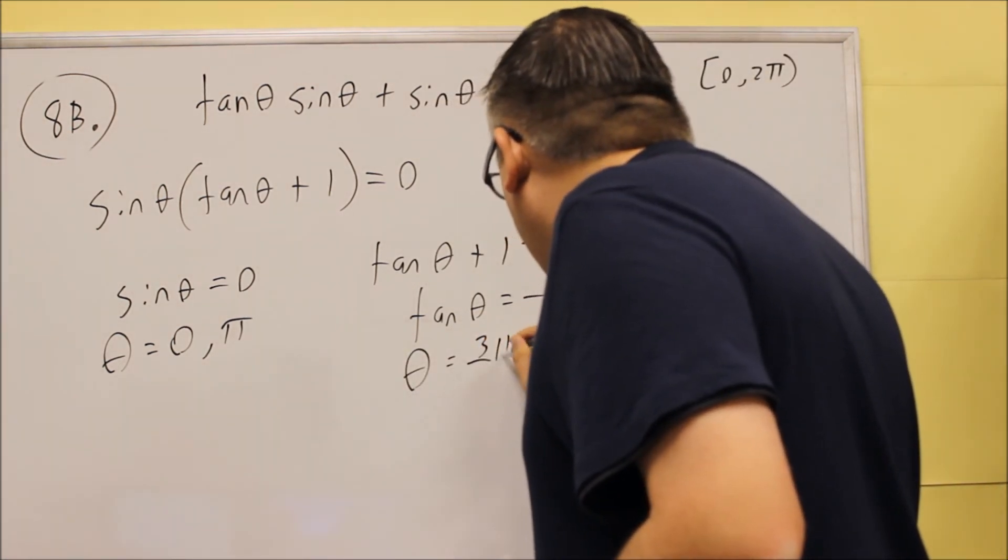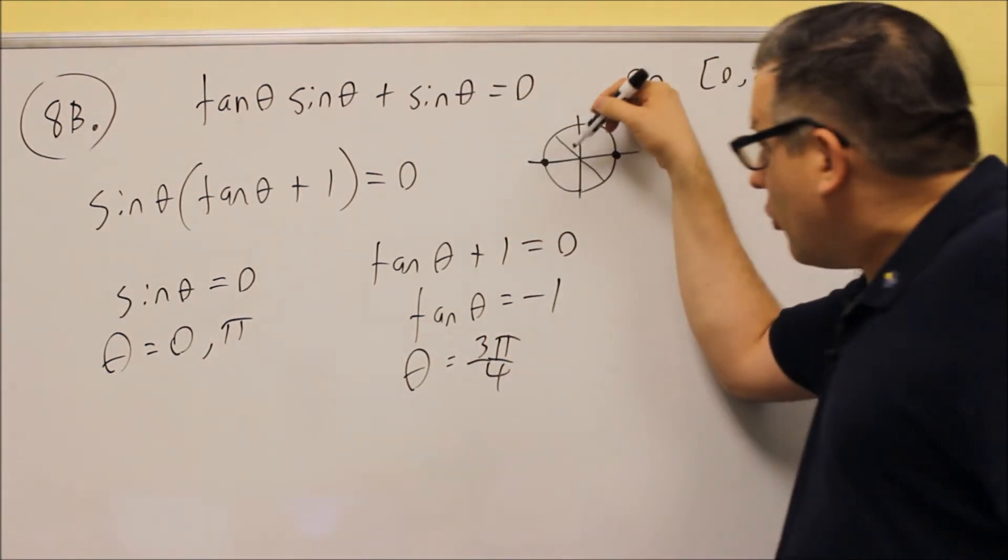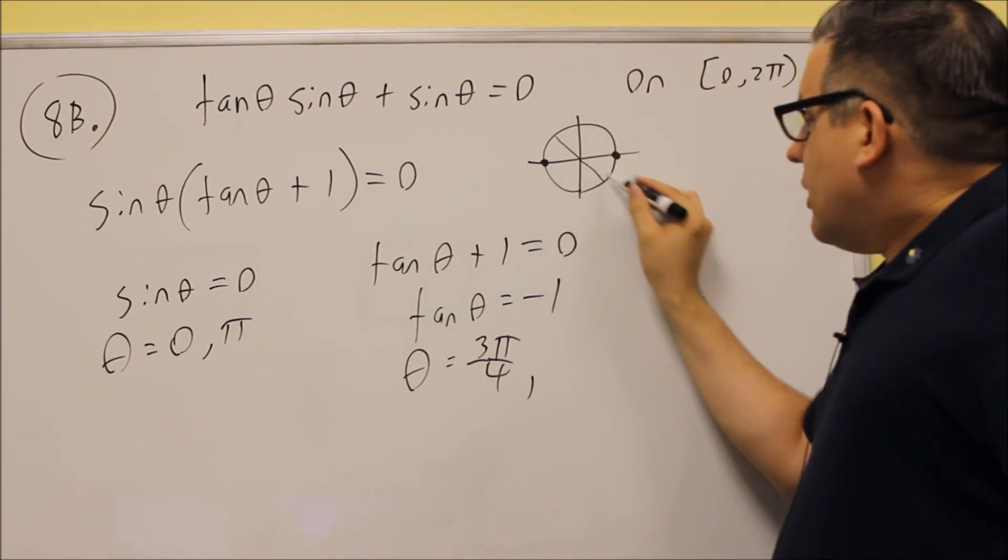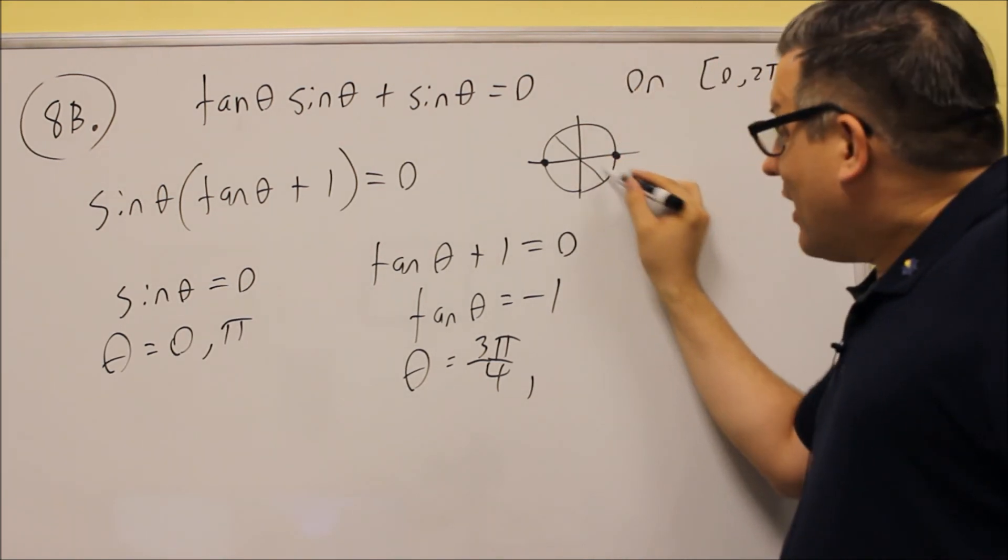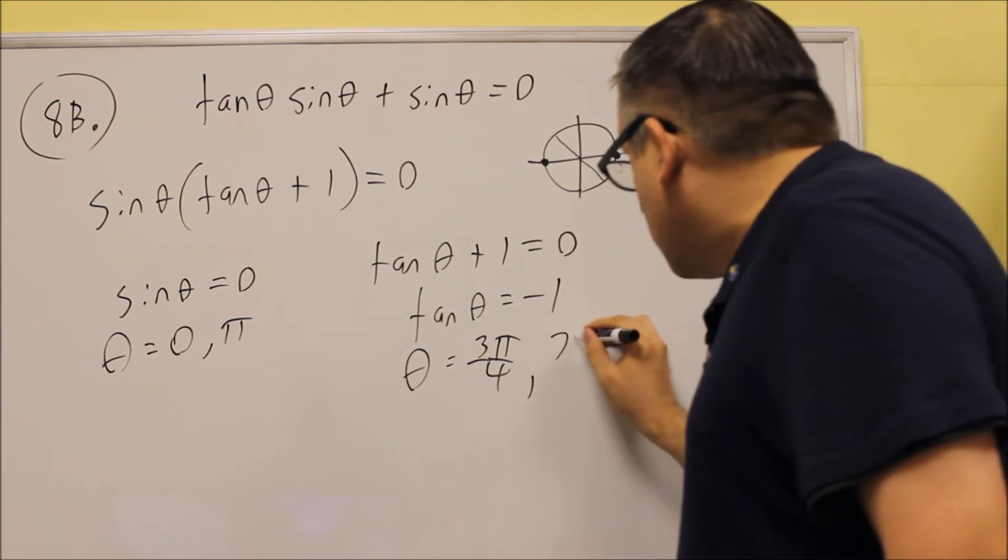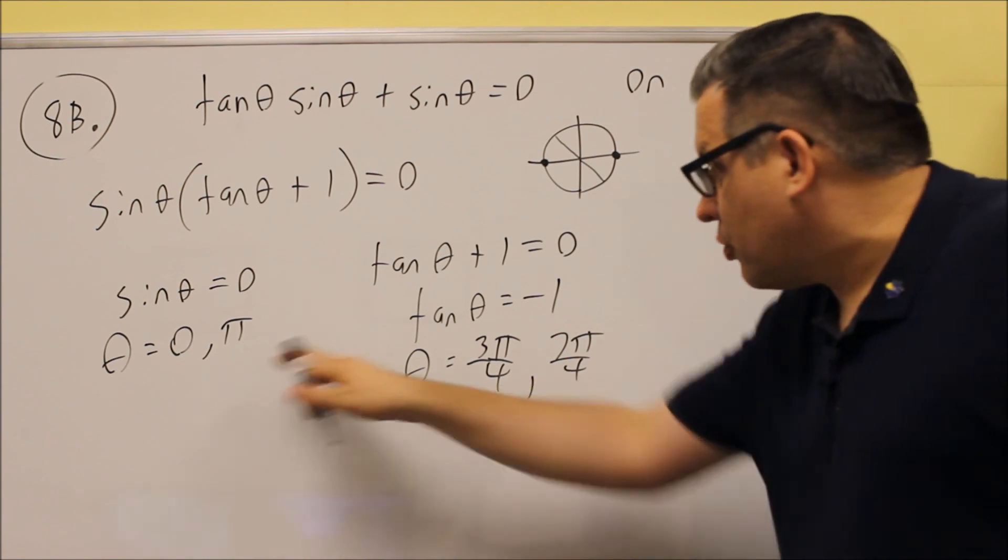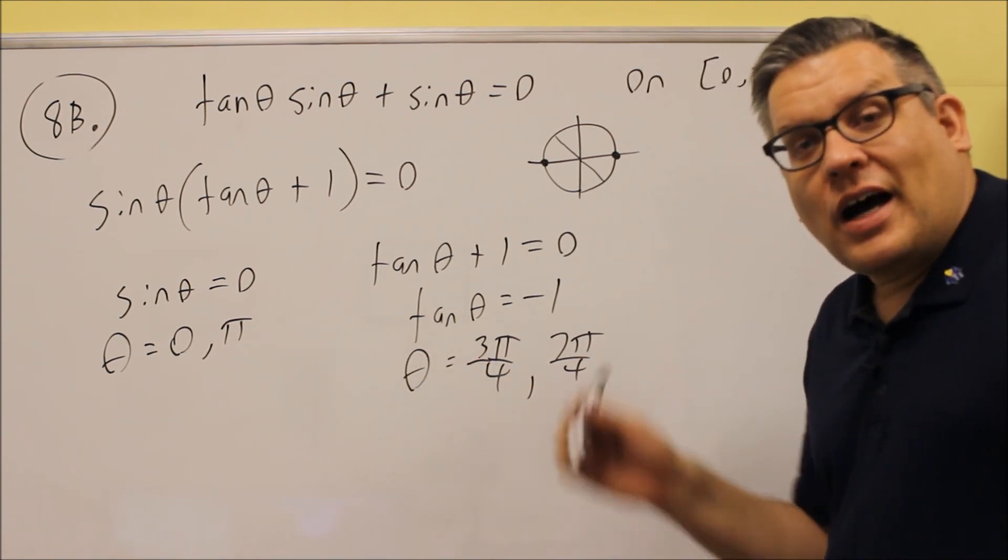So, theta is 3 pi over 4. That would be the angle in the second quadrant. But, the other one is in the fourth quadrant, and that angle there is 7 pi over 4. So, this problem is going to have a total of 4 answers. You'll put all 4 of those down on the answer blank.